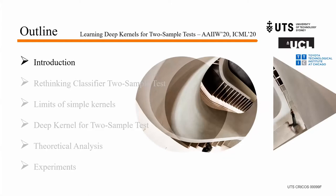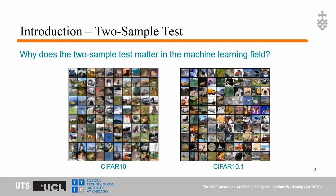A basic assumption of machine learning is that training and test sets are from the same distribution. If they are from the same distribution, we can safely use a classifier trained on CIFAR-10 to classify images in CIFAR-10.1, which is a new test set of the well-known CIFAR-10 dataset. However, if CIFAR-10.1 and CIFAR-10 have distributional discrepancy, using the classifier trained on CIFAR-10 to classify CIFAR-10.1 images will lead to poor performance.